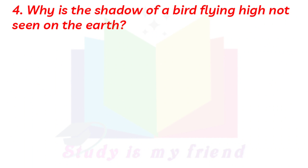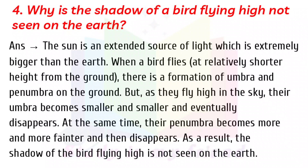Why is the shadow of a bird flying high not seen on the earth? Answer: The sun is an extended source of light, which is extremely bigger than the earth. When a bird flies at a relatively shorter height from the ground, there is a formation of umbra and penumbra on the ground. But as they fly high in the sky, their umbra becomes smaller and smaller and eventually disappears. At the same time, their penumbra becomes more and more faint and then disappears. As a result, the shadow of the bird flying high is not seen on the earth.